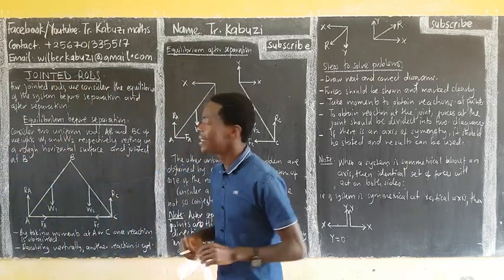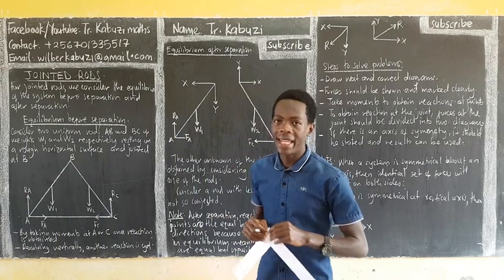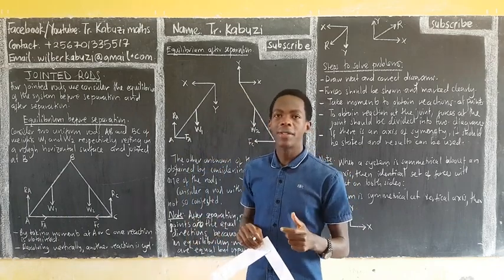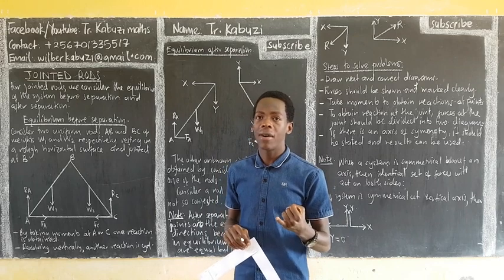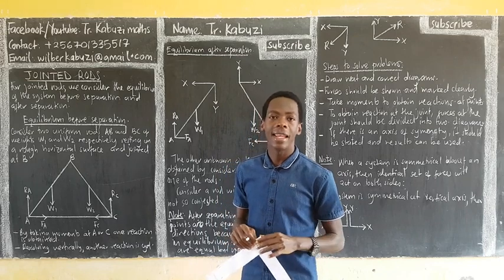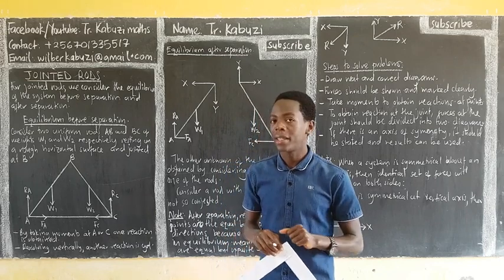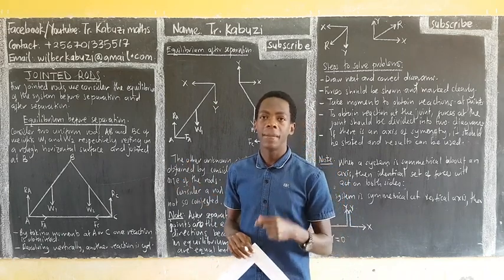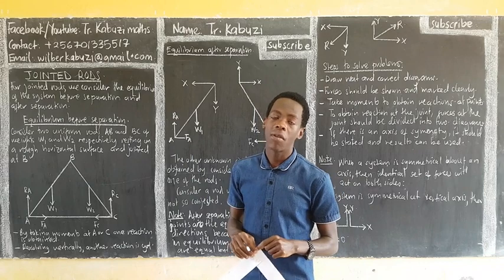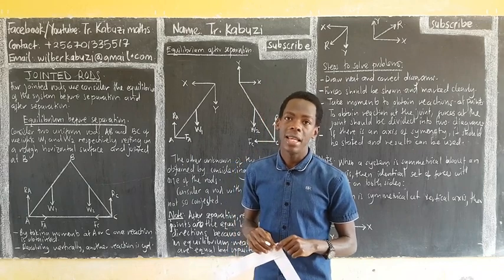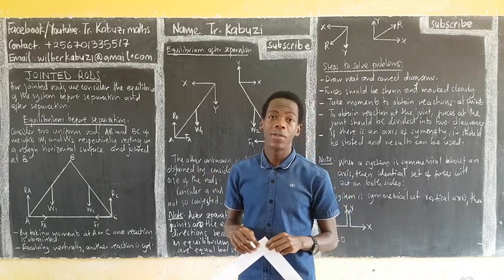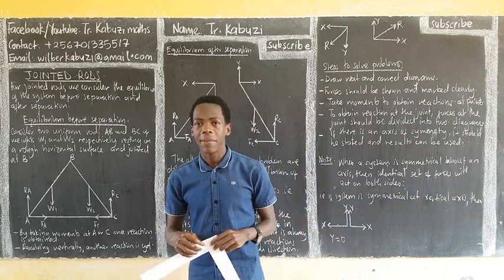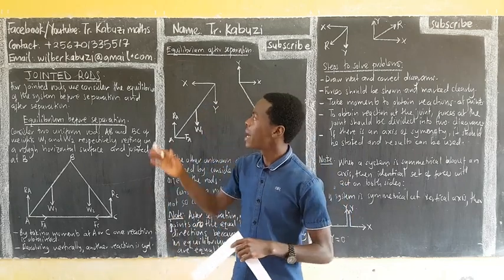Jointed Rods is our new topic we are going to cover in this lesson. To cover joints, of course, you need to know the idea of moments and then the idea of equilibrium of a rigid body. Basically that's the only thing we need. This topic comes immediately after covering equilibrium of a rigid body. Jointed Rods are also examples of rigid bodies, so the first question is: what do we mean by jointed rods?